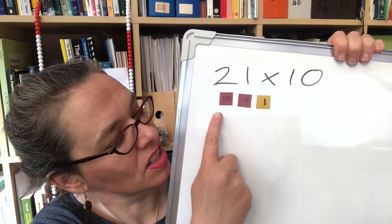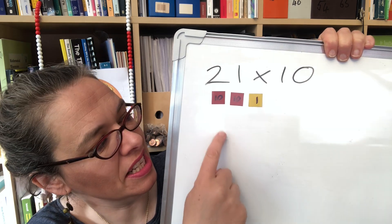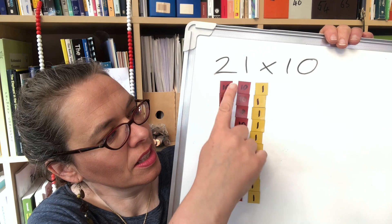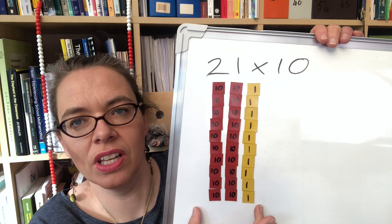So 21 is two tens and one one. To multiply it by 10 we're going to need 10 lots of this. So 10 lots of 21 is going to look like this.